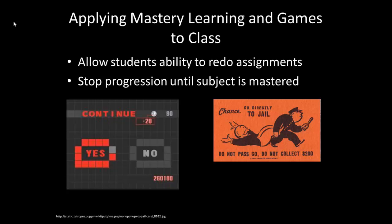If we apply this in our class, we could do it in two ways. One easy approach: allow students to redo assignments at any time — the more chances they have to redo, the more chance they have to learn. Another suggestion: don't let students progress to later units until they've mastered the current one. This lets students build knowledge as foundational blocks for the next unit, since most courses are built in a linear fashion where earlier units support later ones.